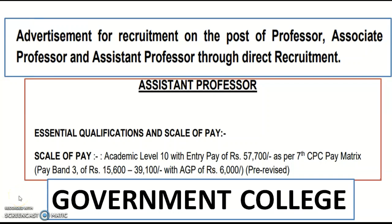In this video we are going to see the professor, associate, and assistant professor vacancies direct recruitment from a government college. For the assistant professor, level 10 category is available, meaning you will get 57,700 rupees per month as salary. After watching this video, please share it with your friends or colleagues who belong to those subjects or departments. If your subjects are not covered, please mention them in the comment section.